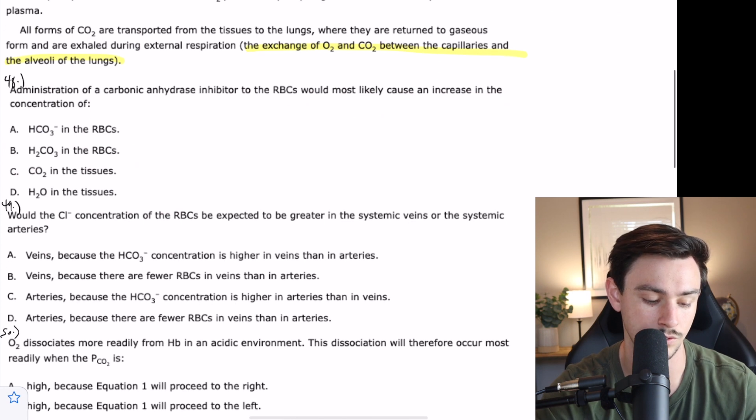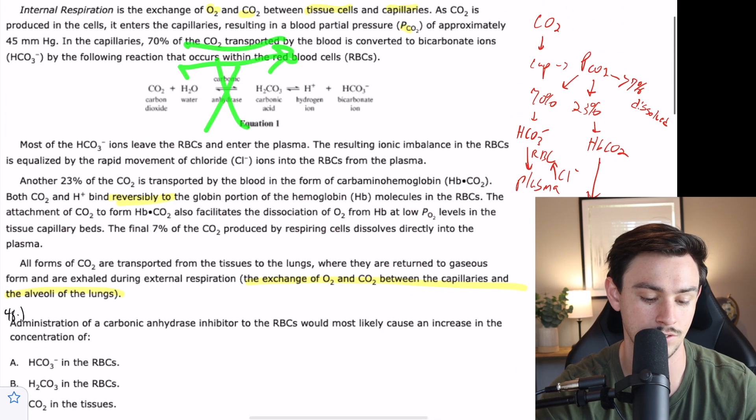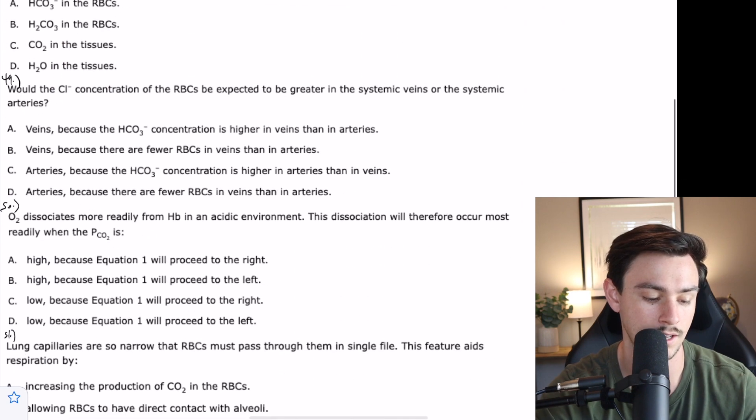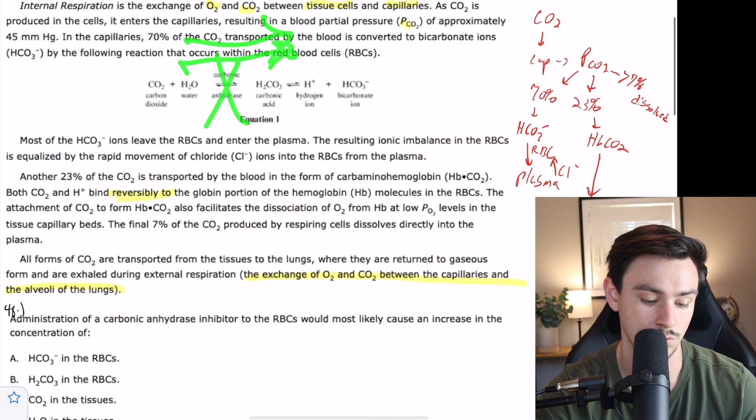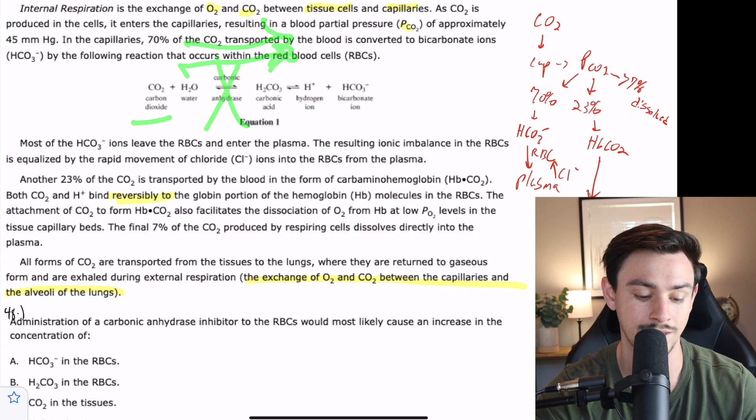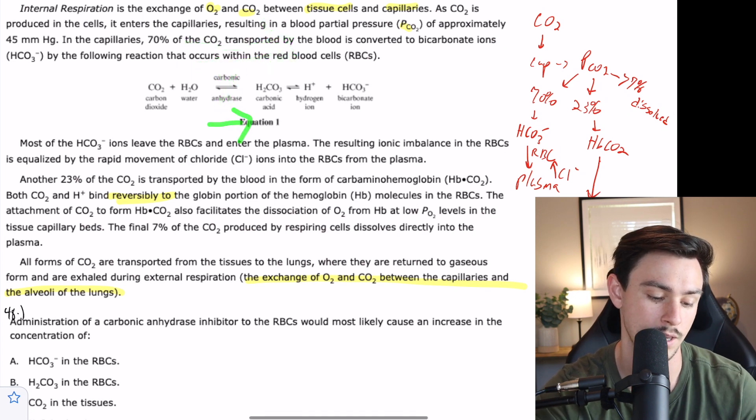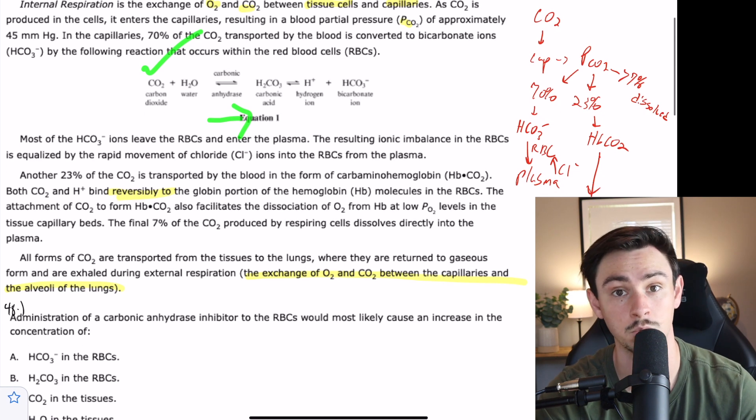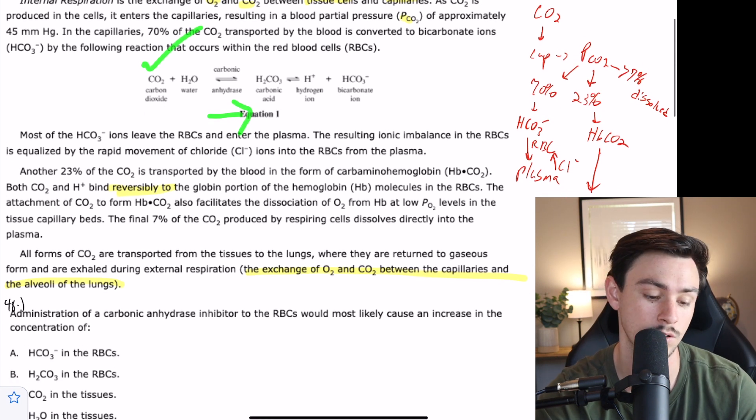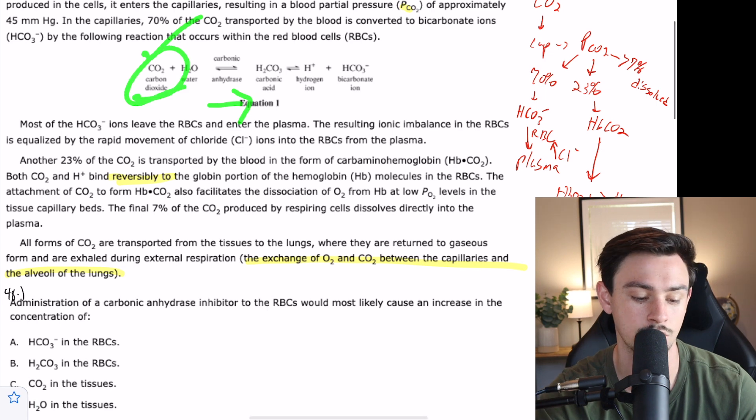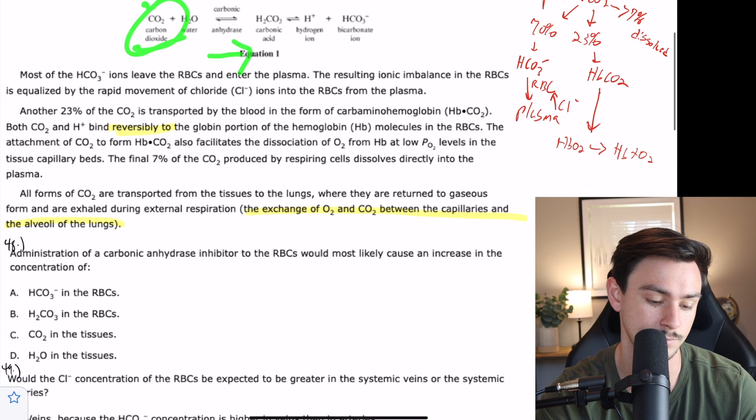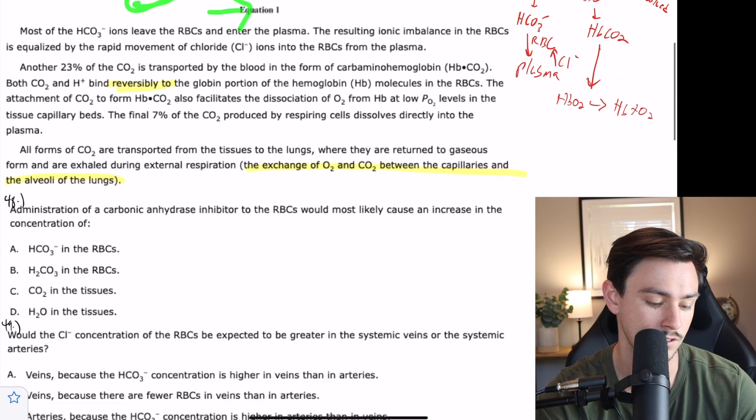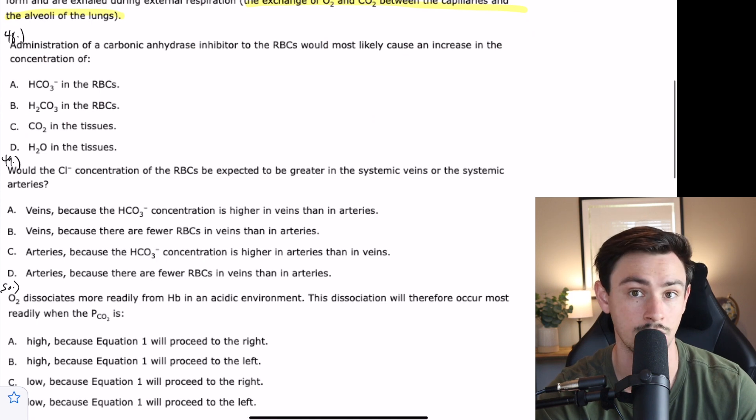Is carbonic acid going to accumulate? No, because we can't get to carbonic acid. C says carbon dioxide in the tissues. Well, it looks like we start with CO2, we cannot convert it, so maybe CO2 will accumulate. And then the question becomes, is CO2 in the tissues to begin with? Yeah, CO2 is in the tissues as a byproduct of respiration. So that checks out.